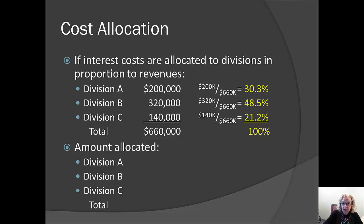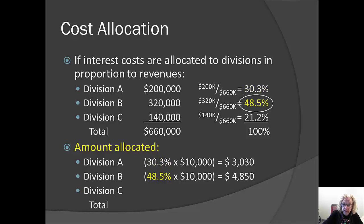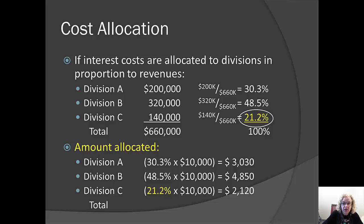Now I'll use these percentages to allocate the interest costs to each division. Division A is responsible for 30.3% of revenues, so it gets 30.3% of the interest cost. We do the same for Division B and Division C. Division B contributed the largest amount of revenues, so it gets the largest share of the interest costs. Division C contributed the smallest amount, so it gets the smallest share. This concept is sometimes called 'ability to bear,' meaning we assign more to the divisions that can handle it better. We then add up all allocated amounts to confirm they total $10,000.